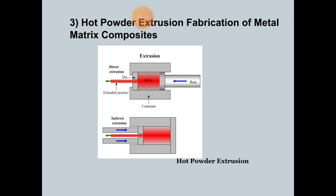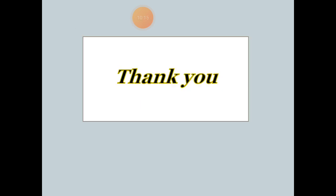Powder metallurgy has many advantages, including: near-net-shaped parts are commonly produced, a considerable weight fraction of nanoparticles can be integrated, it can be used in batch production systems such as automotive industries, and a wide variety of materials can be used as matrix or reinforcing agent to produce different nano-composites. This covers all the powder metallurgical processes in today's lecture. Thank you friends.